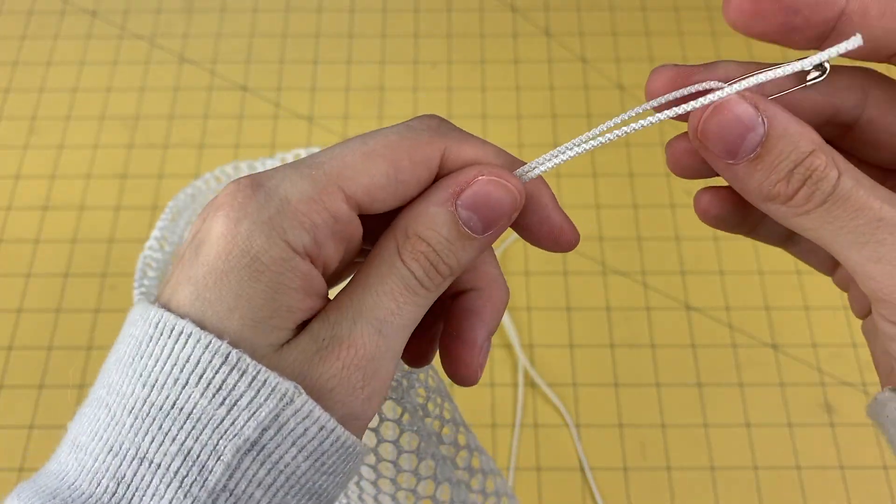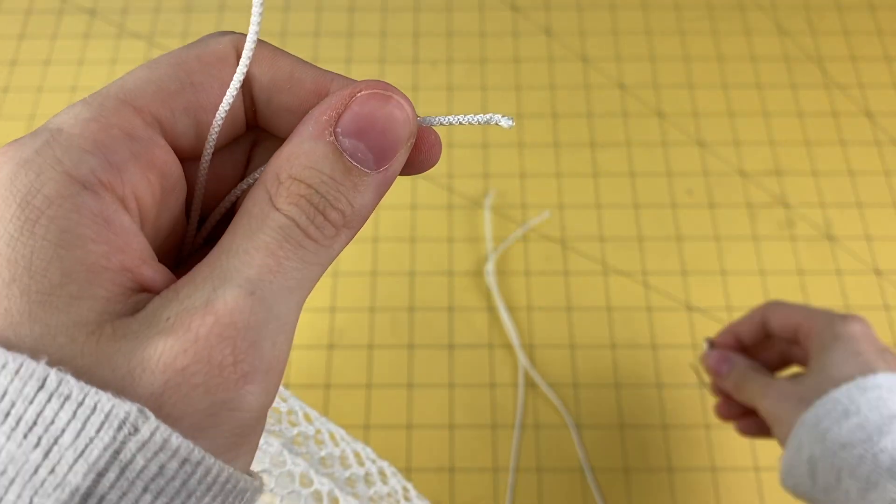Once both pieces of cording are out, you can tie the ends together.